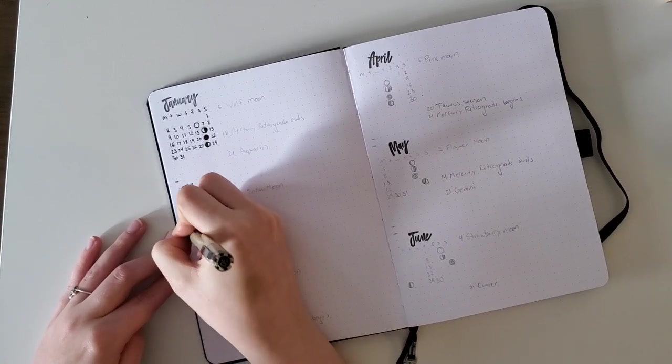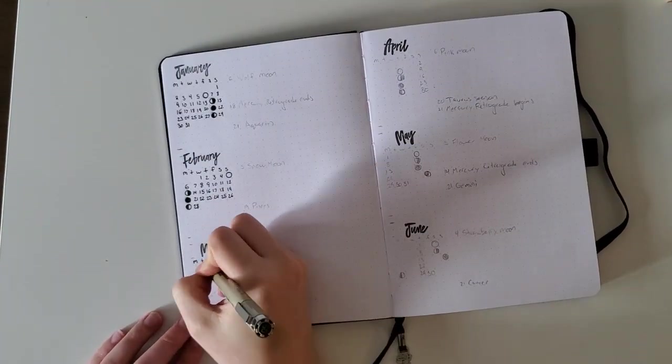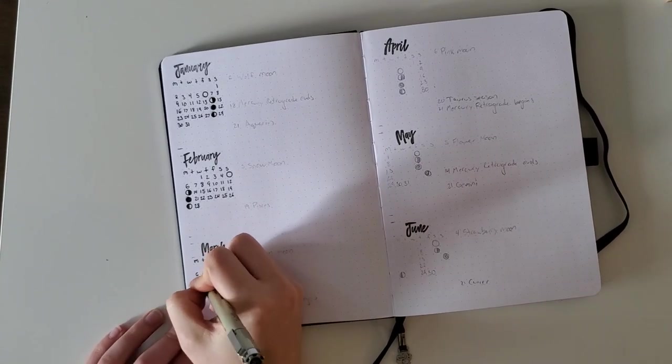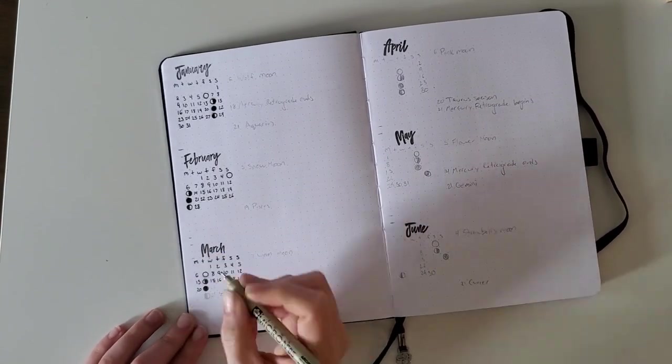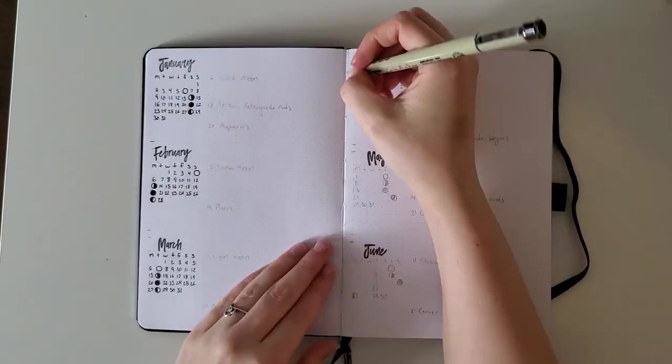I am setting up the most tedious part of the bullet journal. I use stamps for all the month names and then I'm writing out each number for every month.